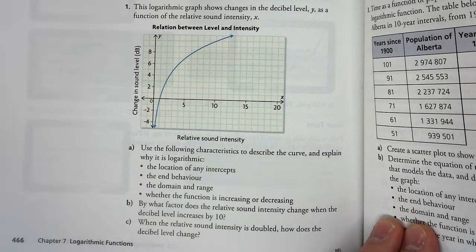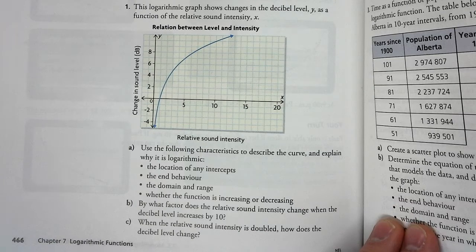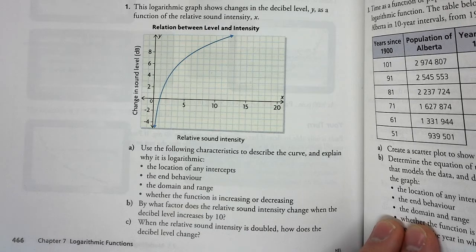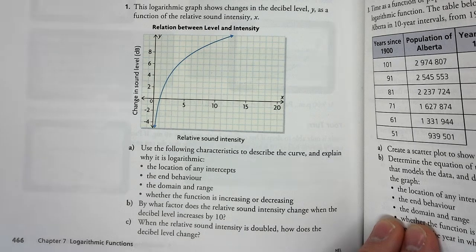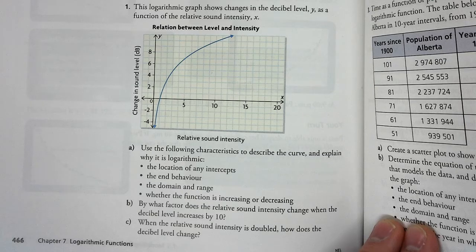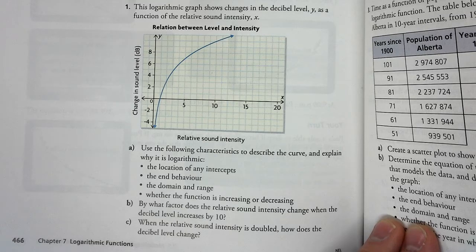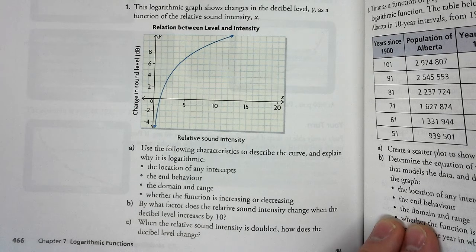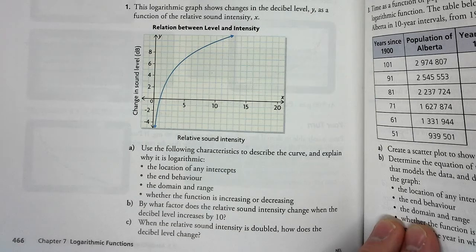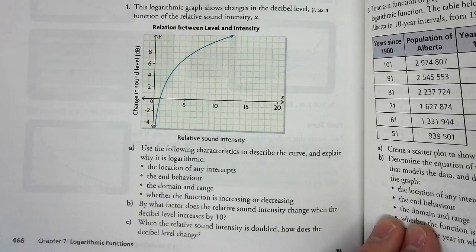So for part B, by what factor does the relative sound intensity change when the decibel level increases by 10? As we're going through this, we see as the decibel level increases, say from 2 to 4, that's not super clear, but as it goes say from 1 to 10, then the relative sound intensity goes from 1 to 10. It's a little hard to see because of the taper of the curve here and how much they've shown you. We could reconstruct this curve in Desmos.